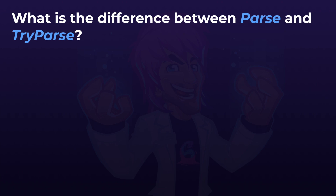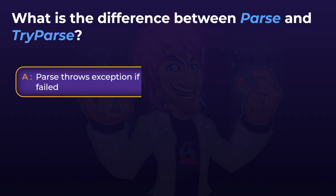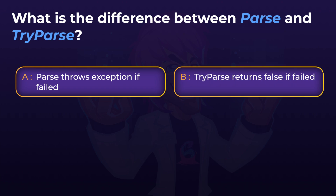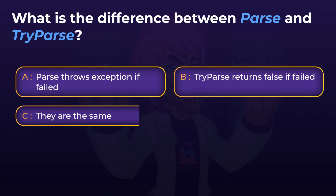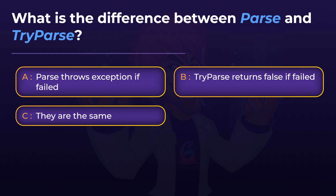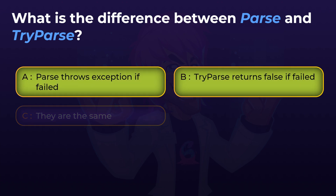What is the difference between parse and try parse? Is it that parse throws an exception if it fails? Try parse returns false if it fails? Or both calls are the same? The answer is both A and B — parse throws an exception when it fails, and try parse returns false when it fails.